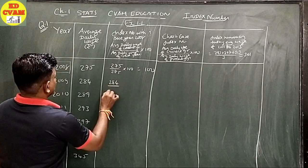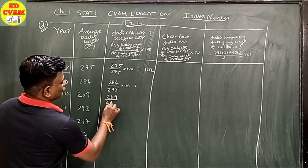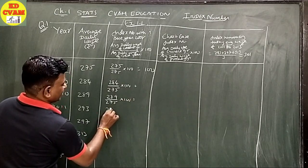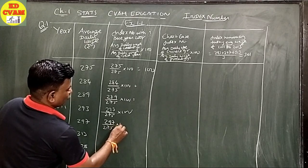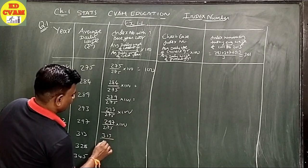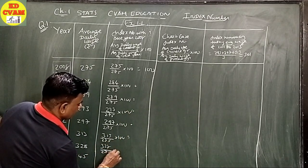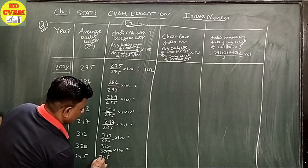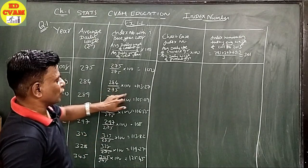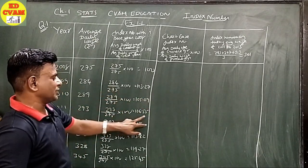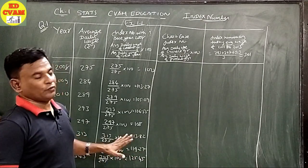Aage dekhiye: 284 upon 275 into 100, phir 289 upon 275 into 100, phir 293 upon 275 into 100, 297 upon 275 into 100, 313 upon 275 into 100, 328 upon 275 into 100, aur 345 upon 275 into 100. Calculations: 103.27, 105.09, 106.55, 108, 113.82, 119.27, aur 125.45. This is for fixed base method.